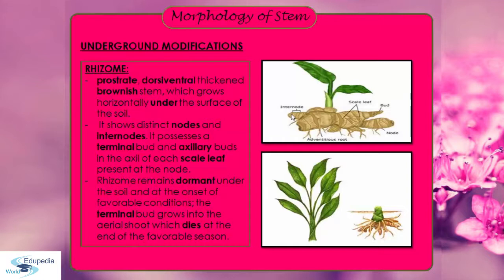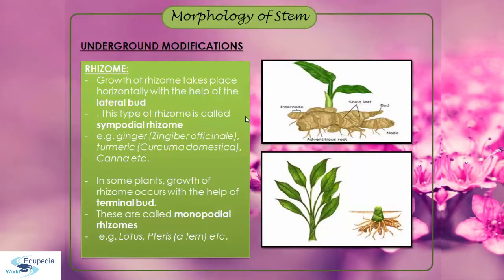Rhizome remains dormant under the soil and at the onset of favorable conditions the terminal bud grows into the aerial shoot, which dies at the end of the favorable season. Rhizome is seen in lotus and Pteris — Pteris is a fern. Growth of the rhizome takes place horizontally with the help of lateral bud.